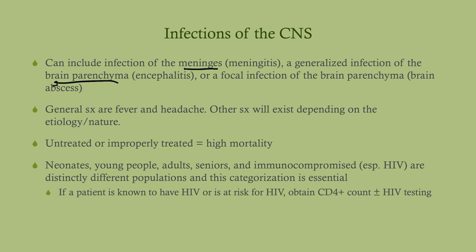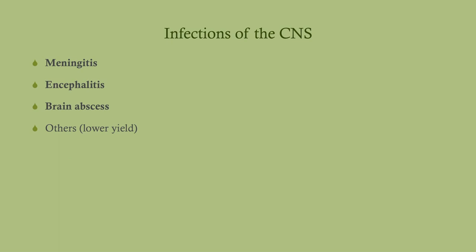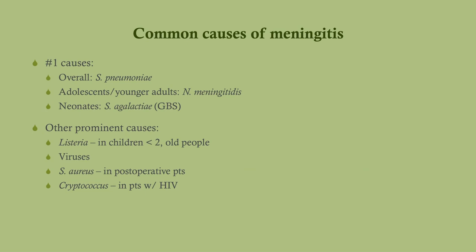There are a variety of populations and each has its quirks as to how CNS infection may present and what pathogens they're susceptible to — and that's essential to understand when we go after treatment. We'll start with meningitis. The number one cause overall is Strep pneumoniae — don't let that word confuse you, Strep pneumoniae can cause things other than pneumonia.